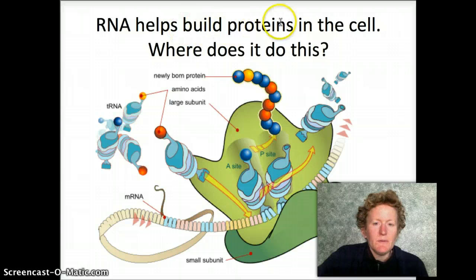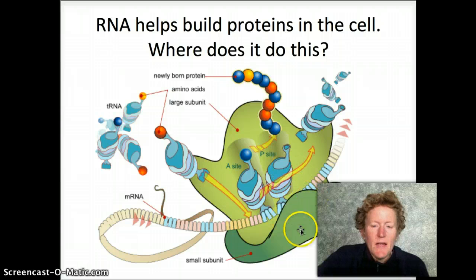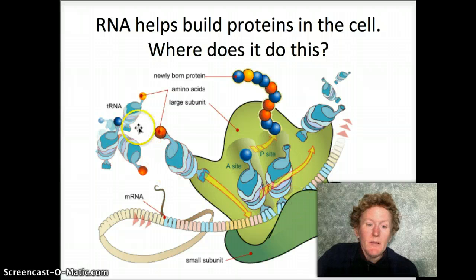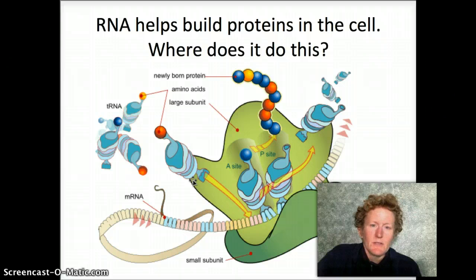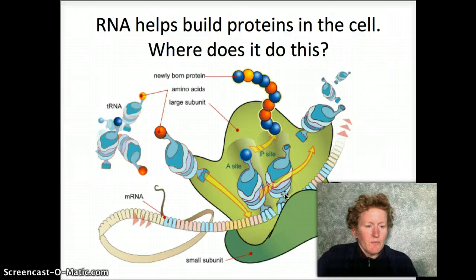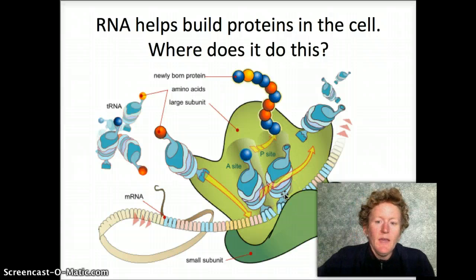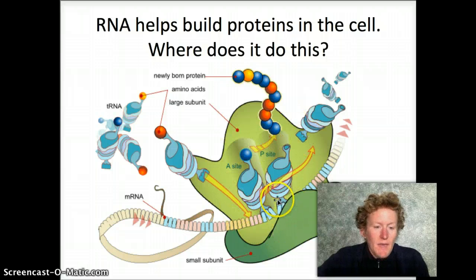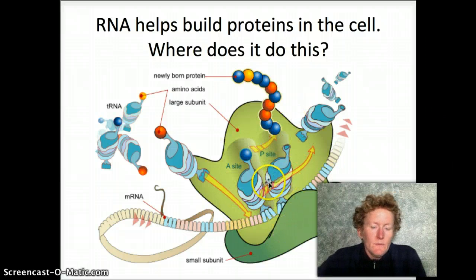RNA helps build proteins outside the nucleus. This happens in the ribosome. RNA actually makes up part of the ribosome — in fact all of the ribosome — plus there's transfer RNA that works with the ribosome to build protein structures. So nucleic acids make up the ribosome and help build proteins, which are part of the structure of your body. In the last video, we talked about collagen, which makes up the structure of your nose, ears, and eyeballs. That collagen gets made in the ribosome, which is made out of nucleic acids — ribonucleic acid.